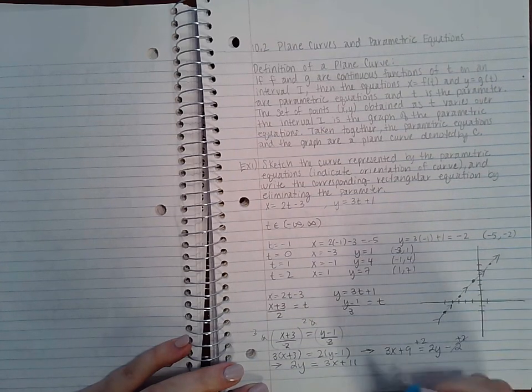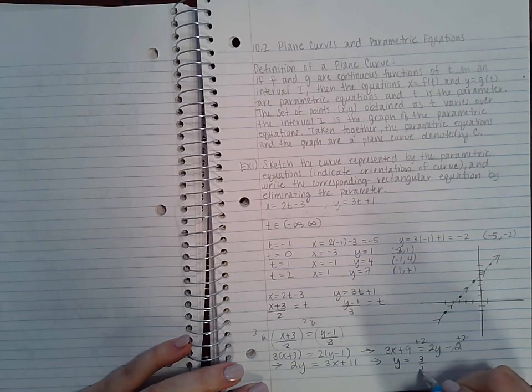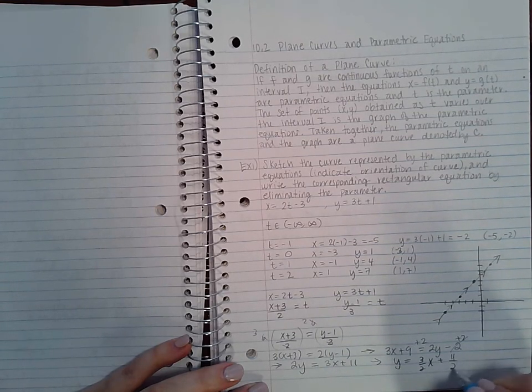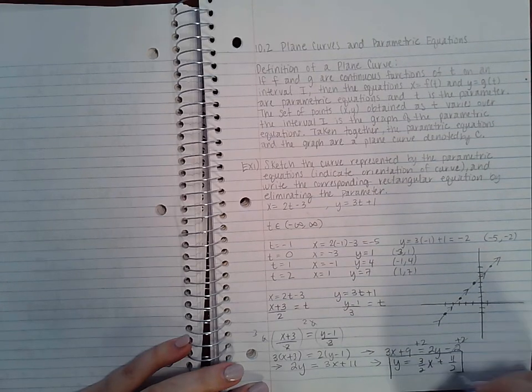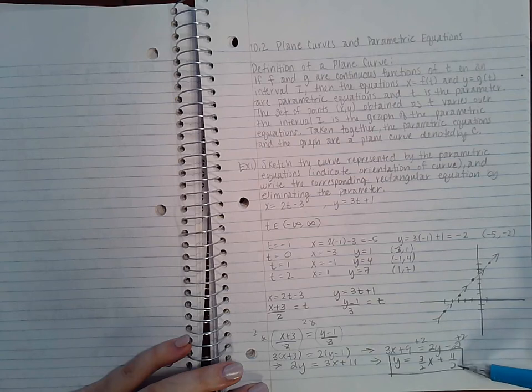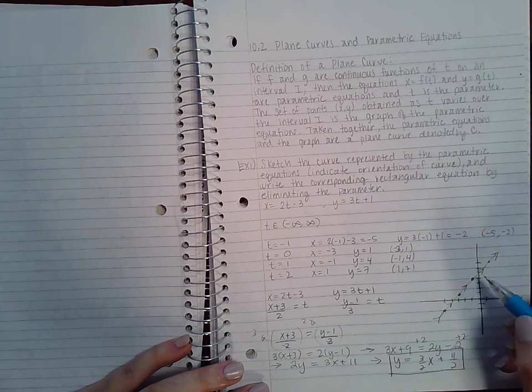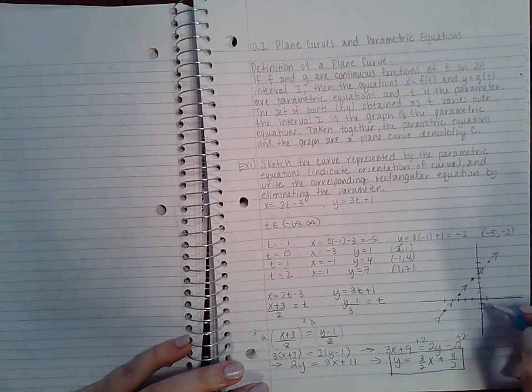This is the equation without the parameters. So 11/2 would be like five and a half, and if I go here—one, two, three, four, five—and it may be off of my alignment here because I'm not on graph paper, but this should be like at five and a half. And then the 3/2, if